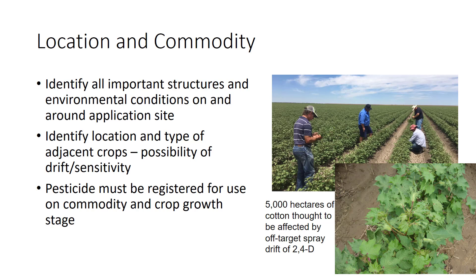The appropriateness of the pesticide for the commodity is a primary consideration. The pesticide must be registered for use on the commodity and crop growth stage for which the application is being considered. Some herbicides, for example, can only be applied during non-bearing years, after harvest, or during dormant stages of deciduous orchards. Although a pesticide may be registered for one crop against a pest, it may not be legal to use against the same pest in another crop. Be sure to consider subsequent crops and plant-back restrictions, as some pesticides leave residues that harm subsequent crops. Always check the label to confirm legal uses.